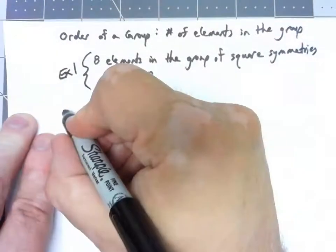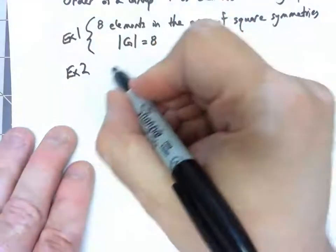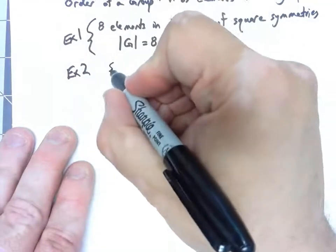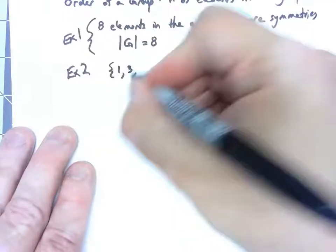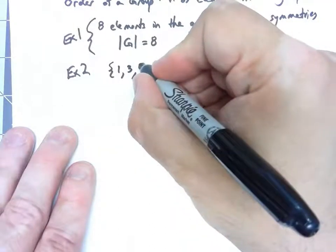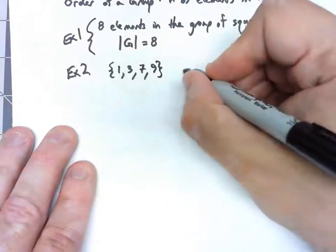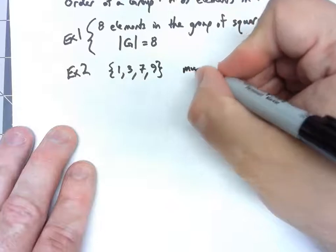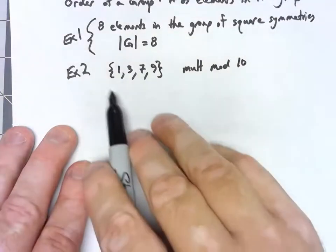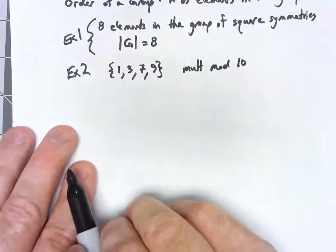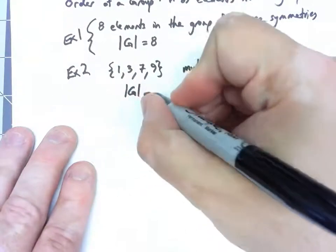Okay, another simple example. One of the groups we looked at was the set {1, 3, 7, 9}, with the operation being multiplication mod 10. Obviously, there are four elements. So the order of that group is 4.